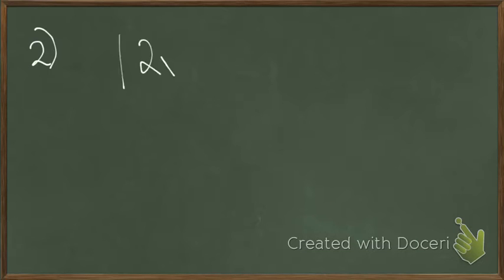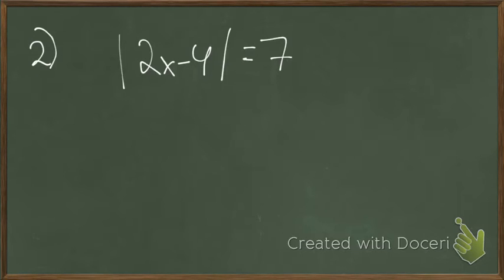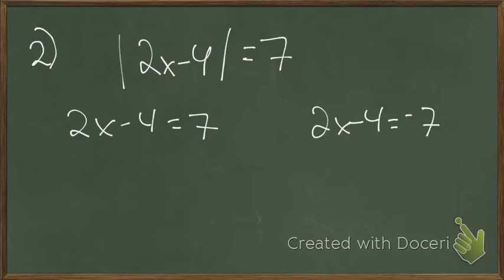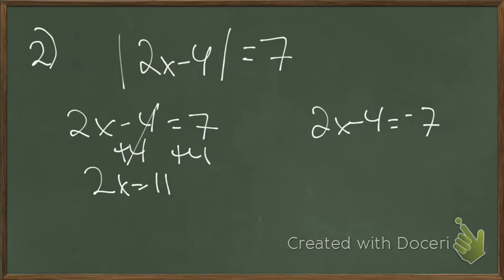This is going to be a review as well — you had questions like this on a test in unit three. The absolute value of 2x minus 4 equals 7. Don't worry about what x is yet; whatever is in that absolute value can equal two things: 7 and negative 7. That's going to set up two equations for us. The absolute value of 7 is 7, and the absolute value of negative 7 is 7.